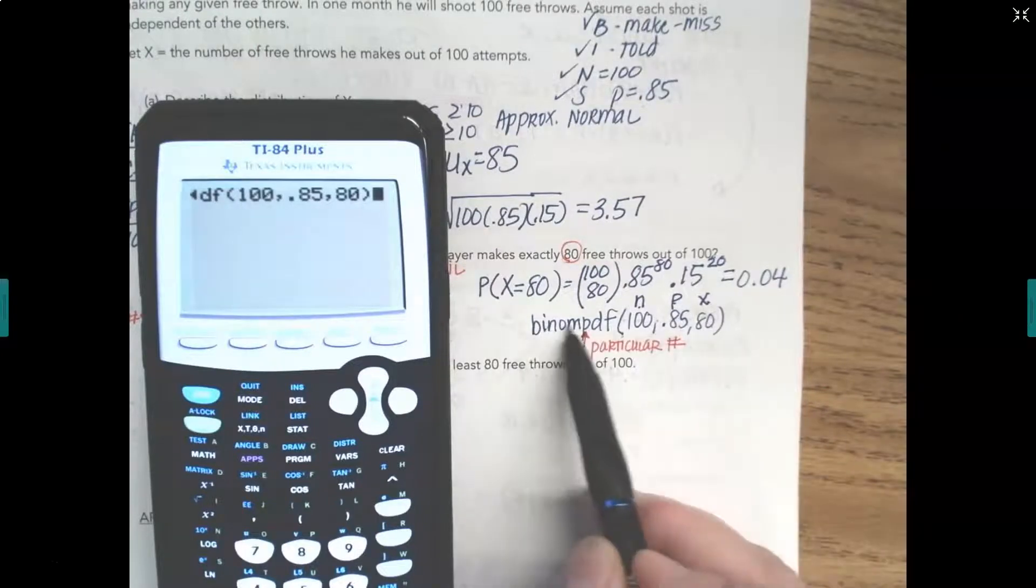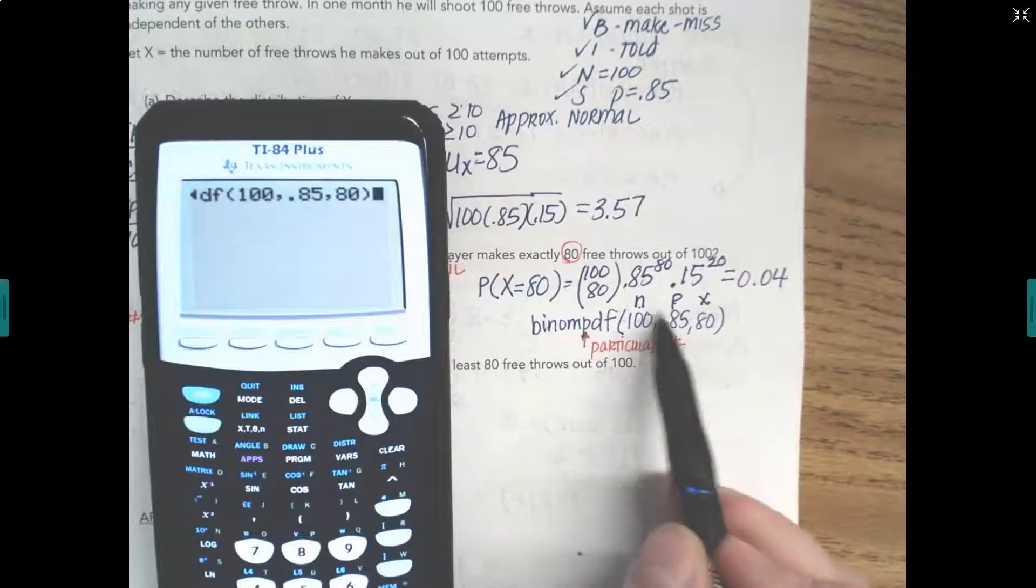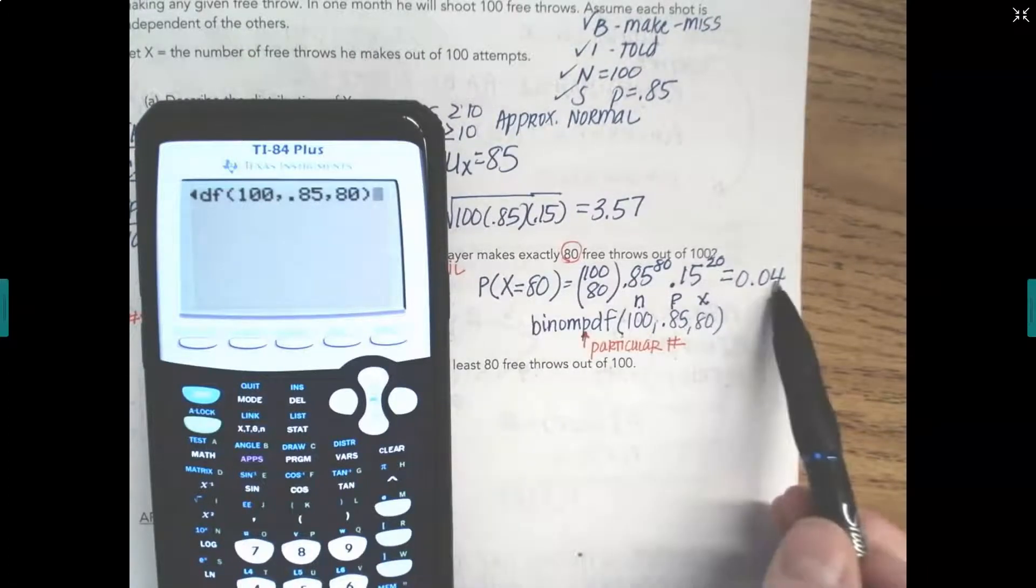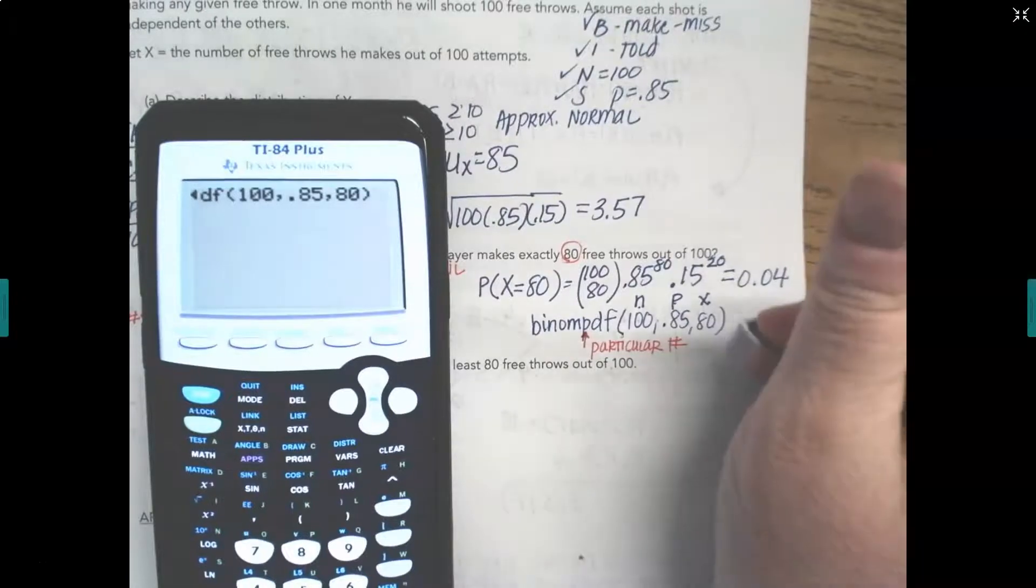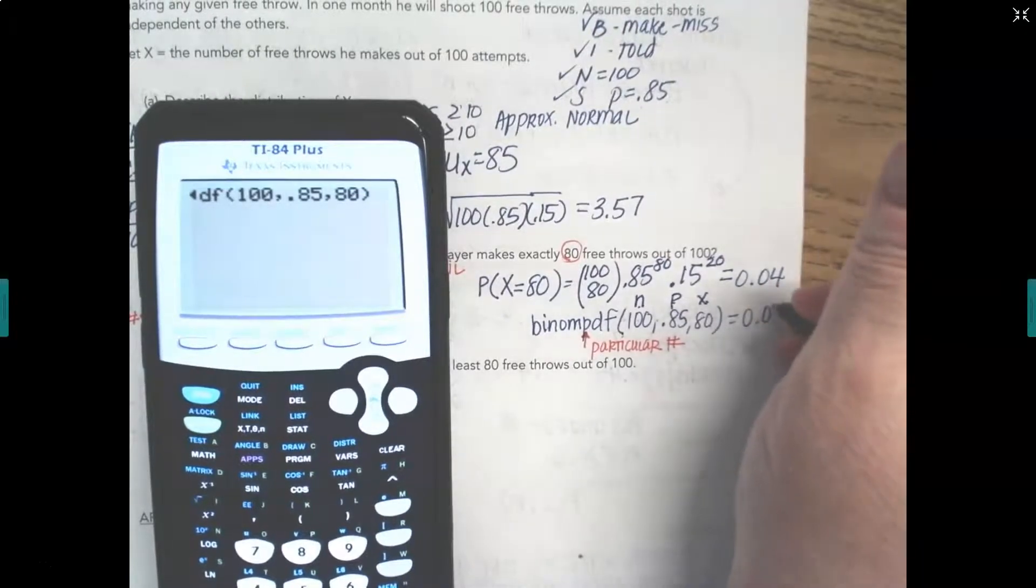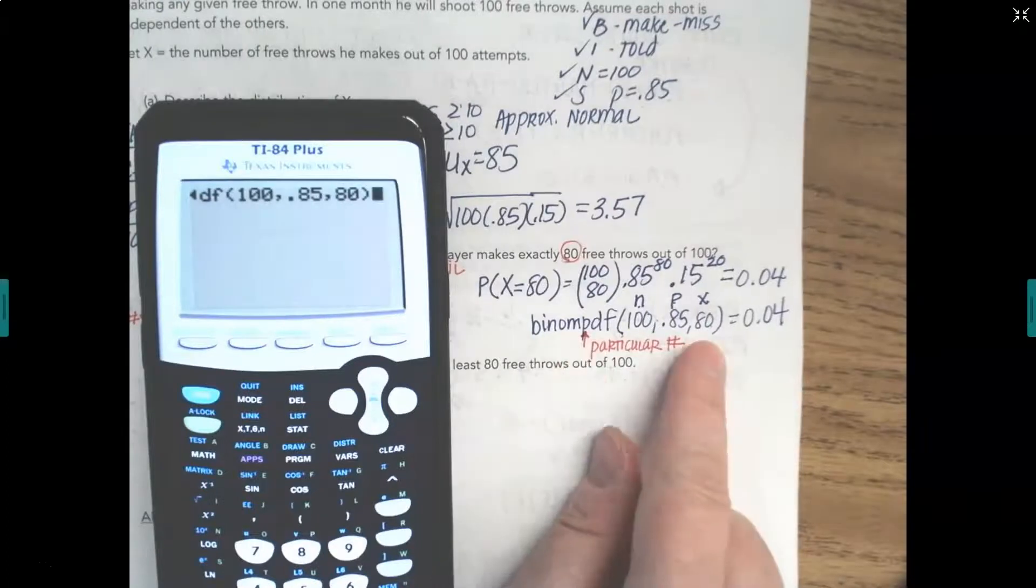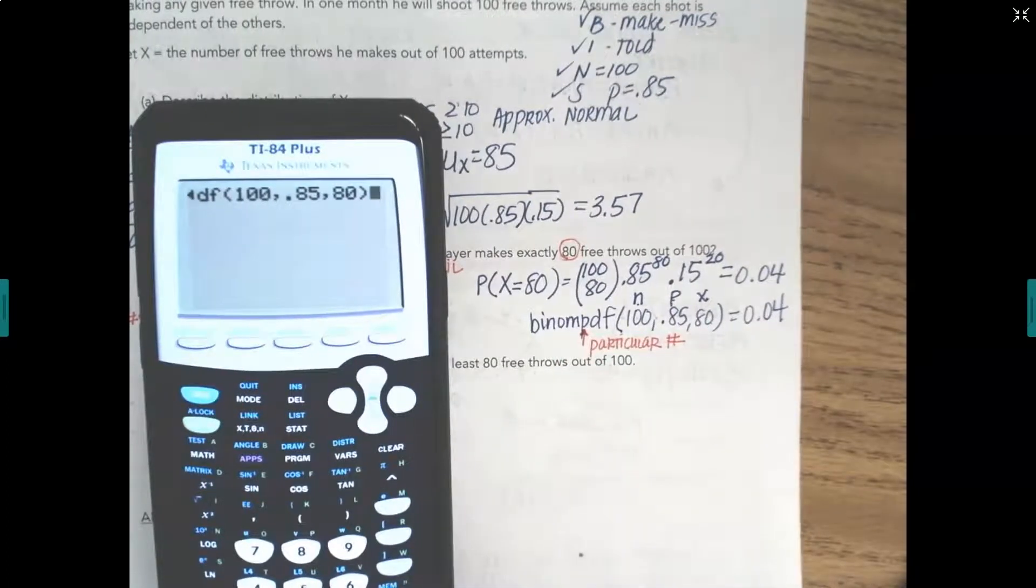So written this way, Binomial PDF, with these three numbers, and they are all labeled, you will get the same credit as if you wrote out the whole formula and gave the answer. And the answer will be the same. I prefer you use the calculator just because you're less likely to make an error. I just want to make sure that you get full credit for using your calculator function.